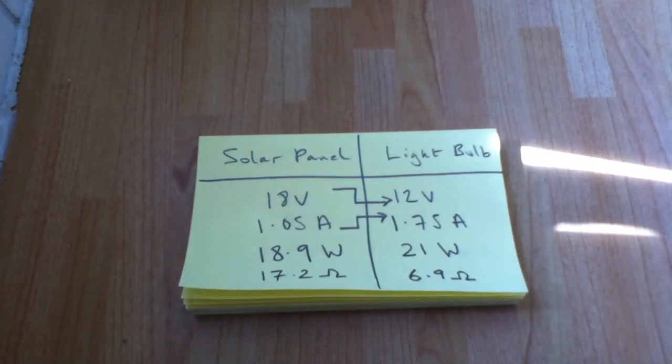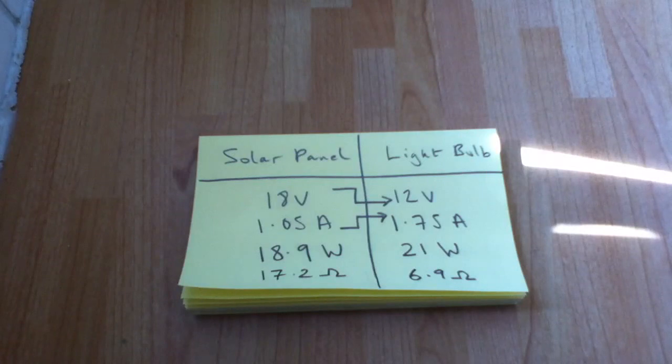And there's a theorem called the Maximum Power Transfer Theorem, otherwise called Jacobi's Law. And it states that for maximum power transfer from a source generator to a load, you have to have the resistance of each the same. And clearly here, the resistances are not the same, and that's why we're not getting maximum power transfer.